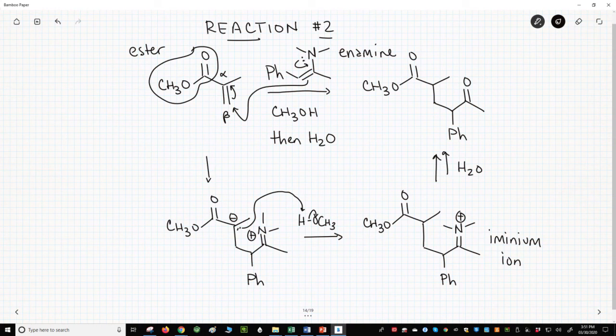Let's number the Michael acceptor carbons: 1, 2, 3, 4. Combining the Michael addition and enamine chemistry can quickly make very interesting molecules.